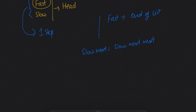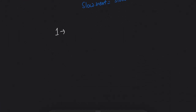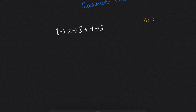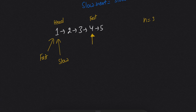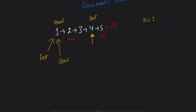Let's take an example. Suppose this is our linked list and n is 3. In the beginning, fast and slow both point to head. We increase fast by n steps, so after 3 steps fast points to 4. Now we increase both fast and slow by one step until fast reaches the end of the list. After one step, fast will be here and slow will be here.